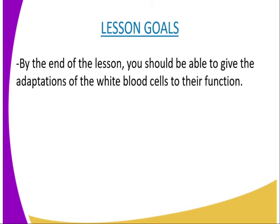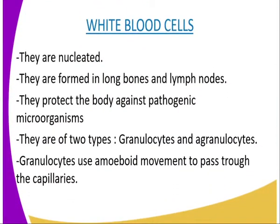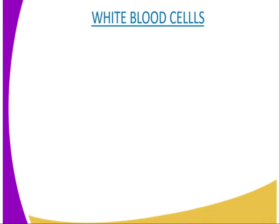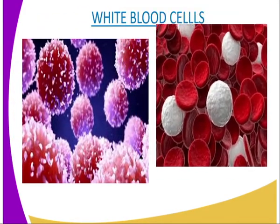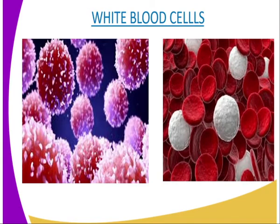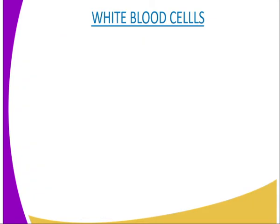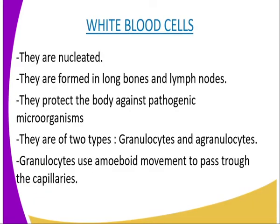The white blood cells, in biological name, are also known as the leukocytes. Unlike the red blood cells, white blood cells are nucleated — that is, they have a nucleus. They lack haemoglobin and their cytoplasm appears colorless. They are fewer in number but larger than the red blood cells, at about 7,000 leukocytes per cubic millimeter of blood.